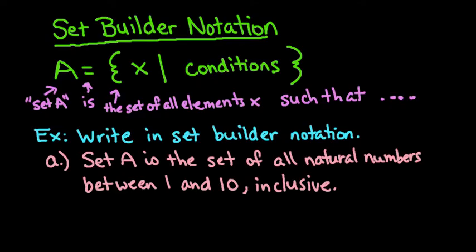Set builder notation appears like this, where you have set A is the set of all elements X. This line right here is read as 'such that' these conditions apply. So the conditions change from problem to problem, but to write it in set builder notation, this is what it should look like.